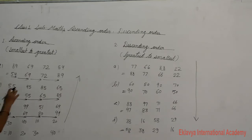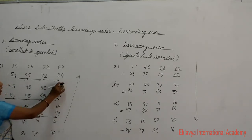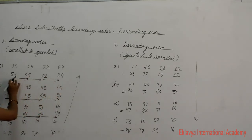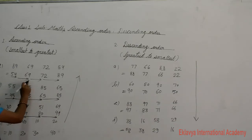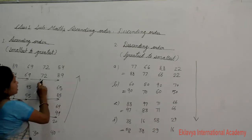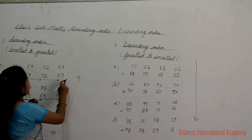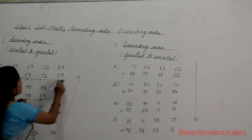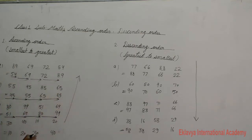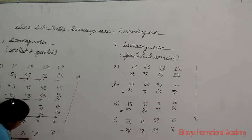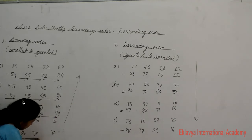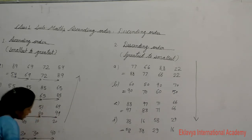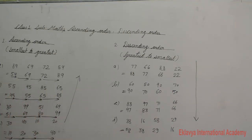Look at the board — every number is increasing in ascending order. 54, 69, 72, and 89 — the numbers increase in a row. Next: 10, 20, 30, then 40.